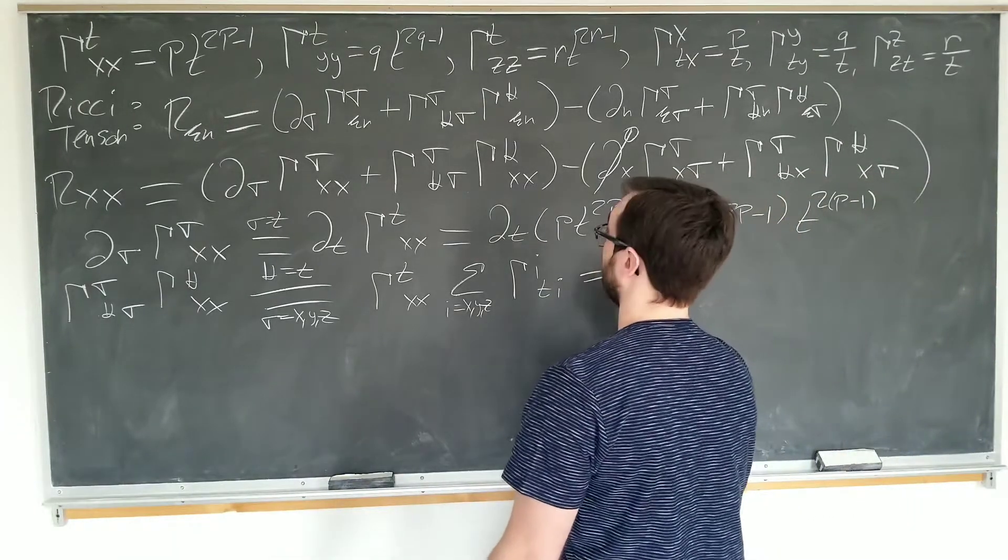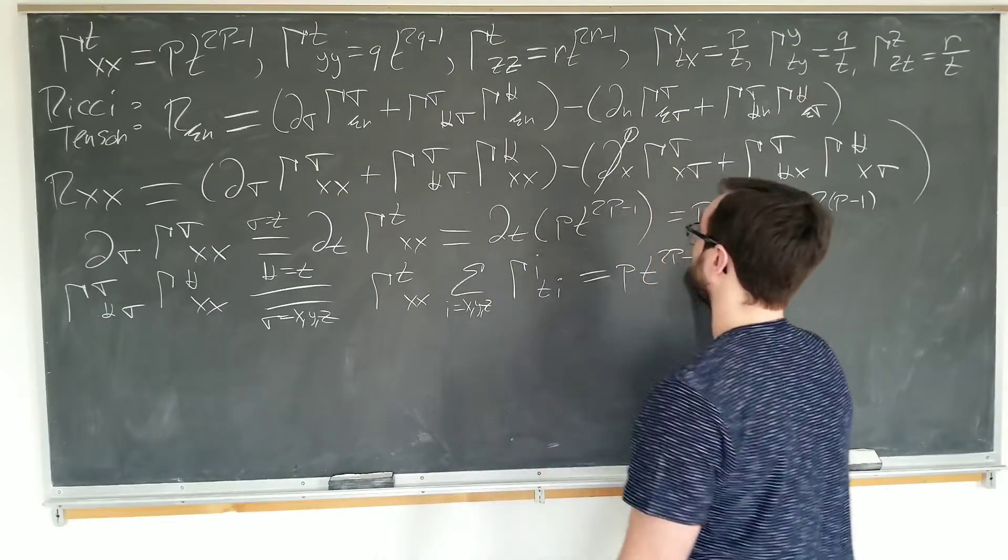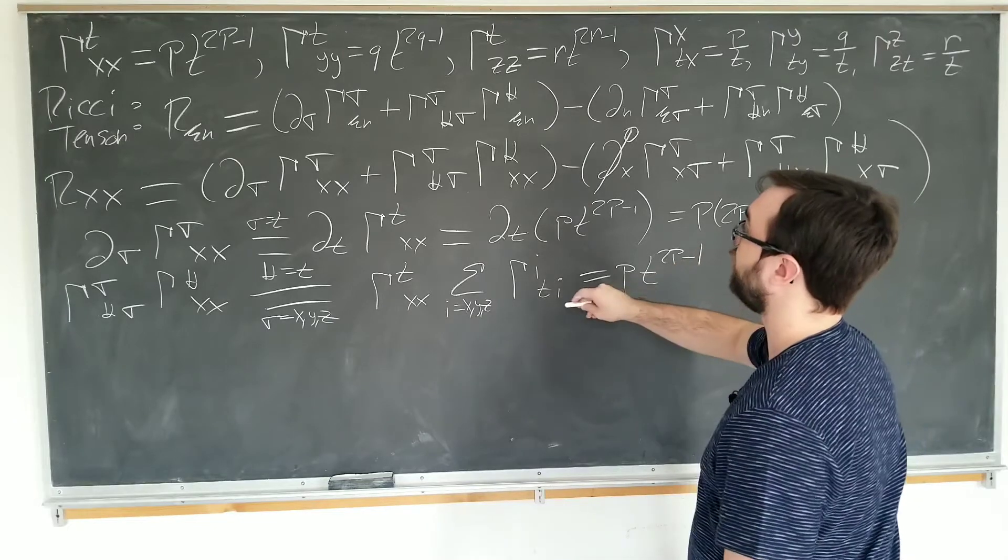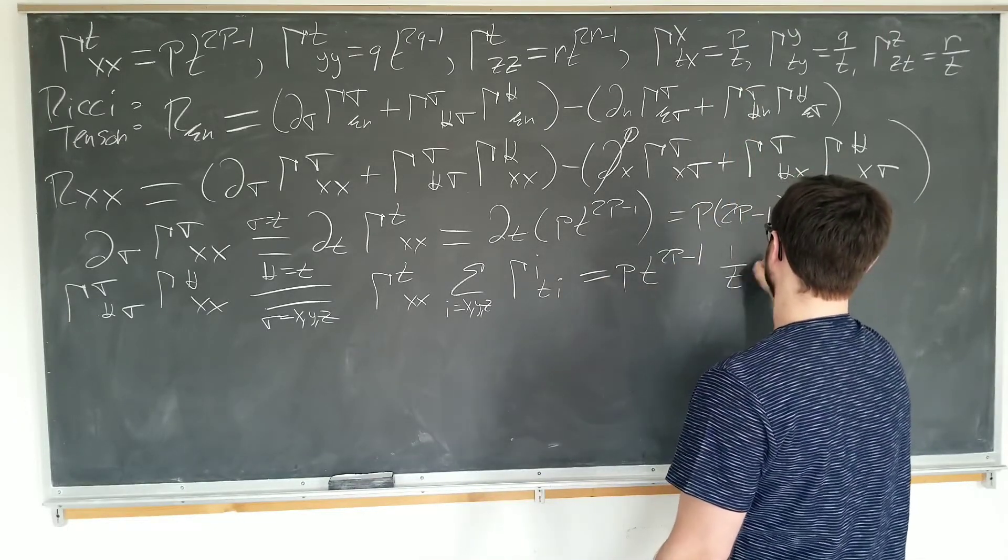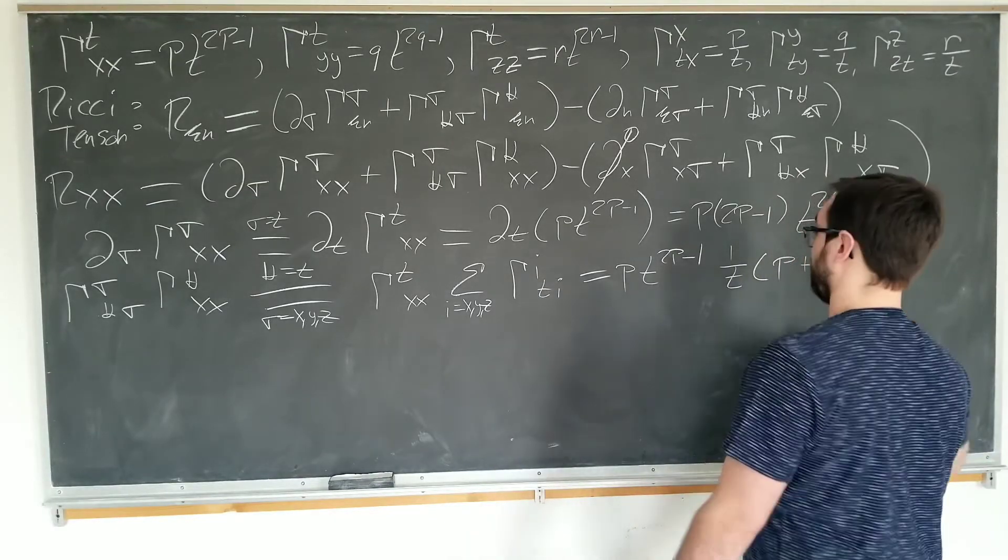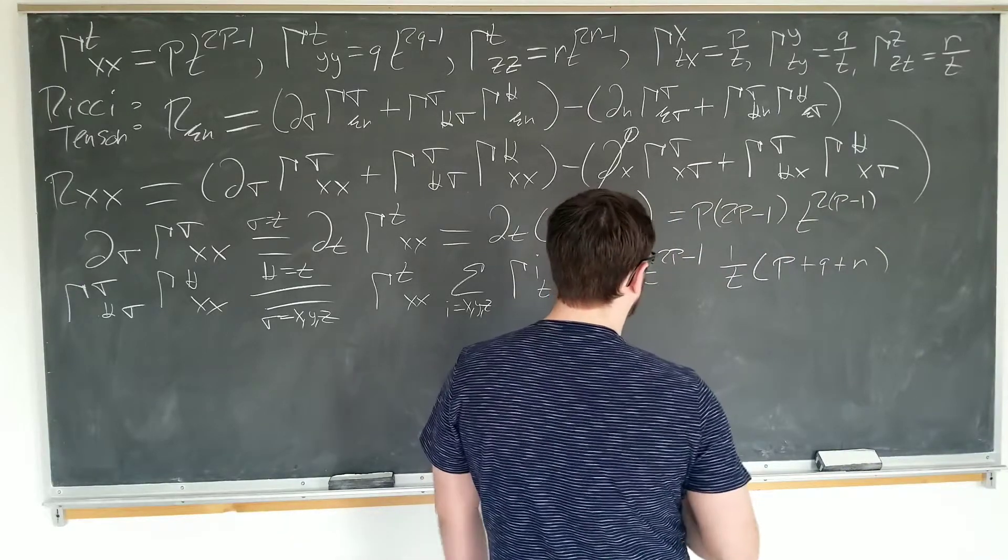Okay. T xx. Well, we have P*T^(2P-1) times the i t i's, summation of the i t i's. Well, looking at an i t i, it's just a common factor of 1 over T, then you have P plus Q plus R. So it's really not that scary at all.